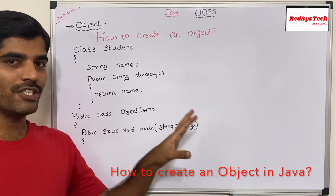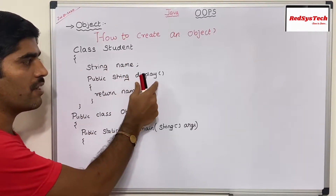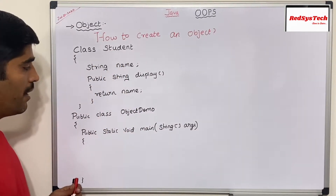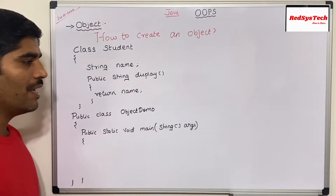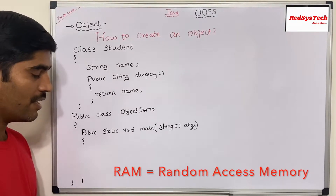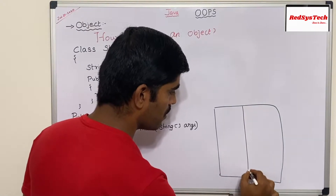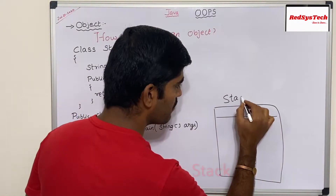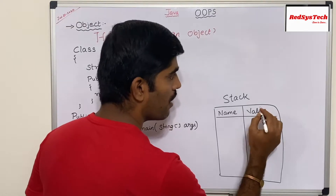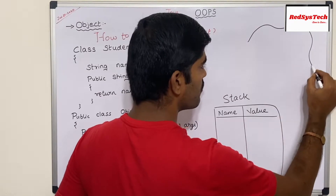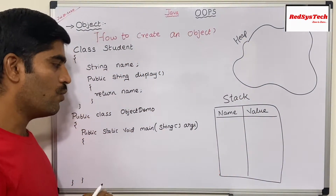Let's see how we can create an object in Java. I have an example of a class called Student, where the Student class contains a variable called name and a method called display, just to display the name of that particular student. I have a main class where I'm going to write code to create an object for this particular class. Basically there are two types of memory within RAM — the first one is called stack, which contains a name and value, and the other memory type is called heap memory.